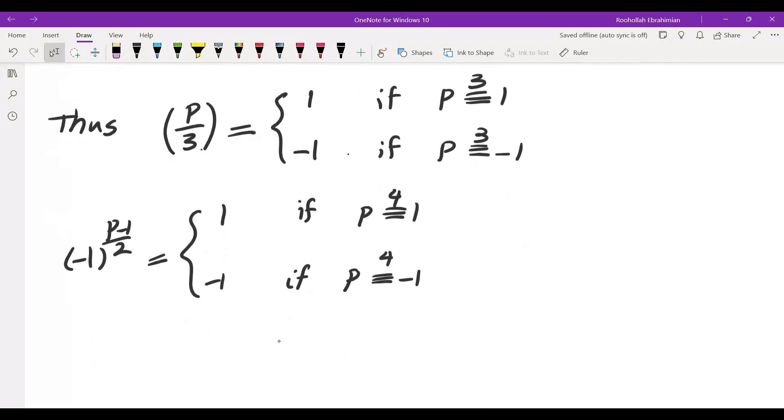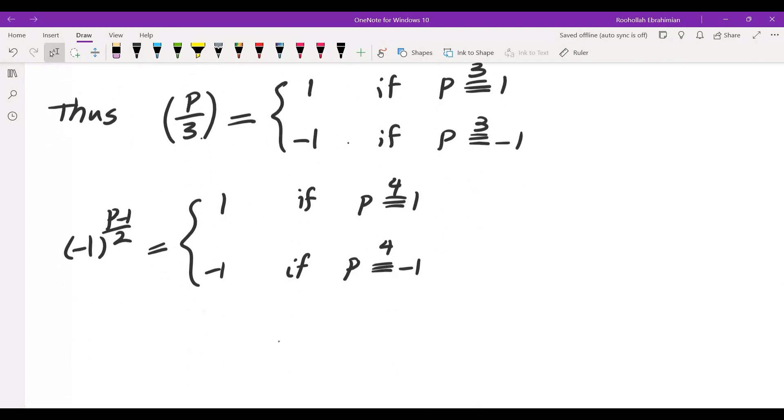So let's now determine when the product is 1 and when the product is negative 1. The product of these two, negative 1 to the power of P minus 1 over 2 times P over 3 is 1, if and only if both of them are 1 or both of them are negative 1.